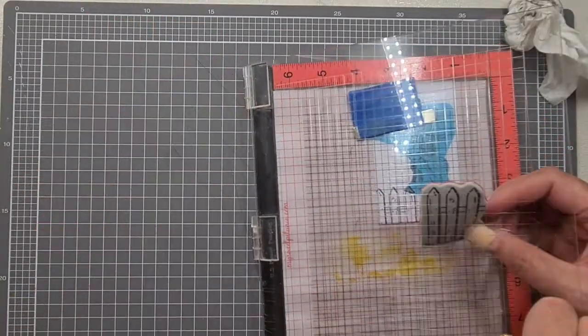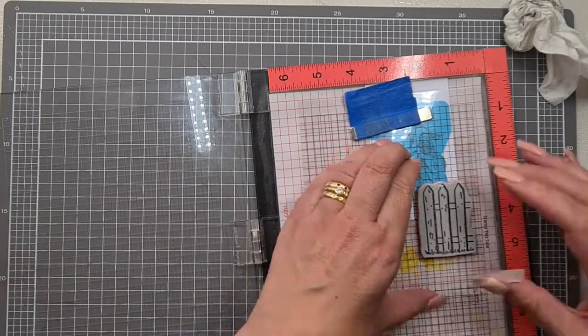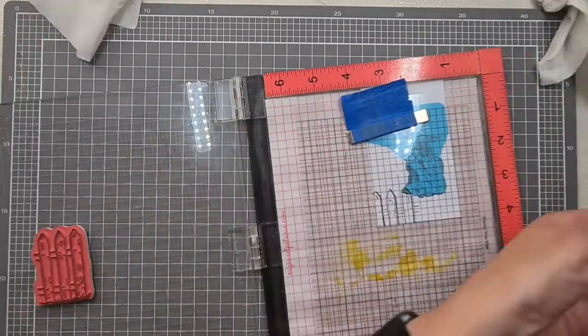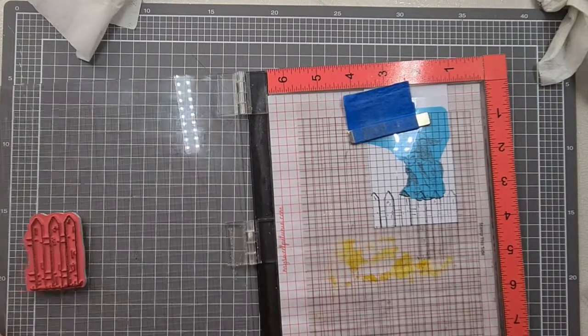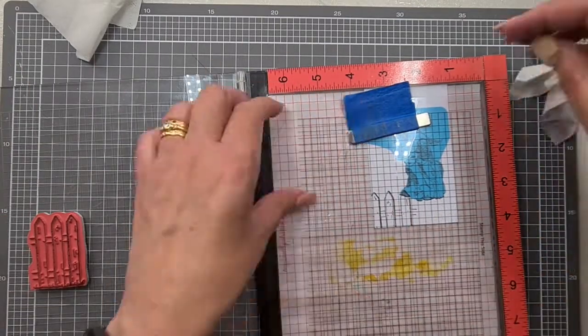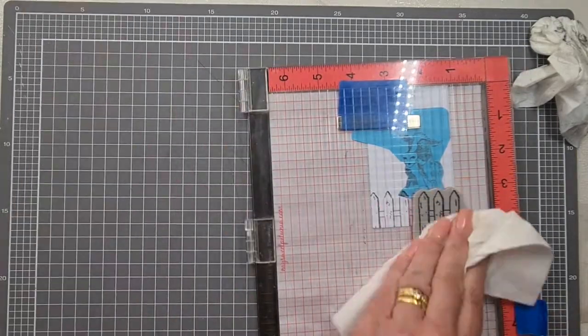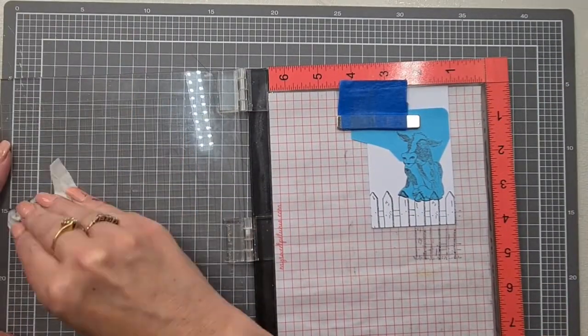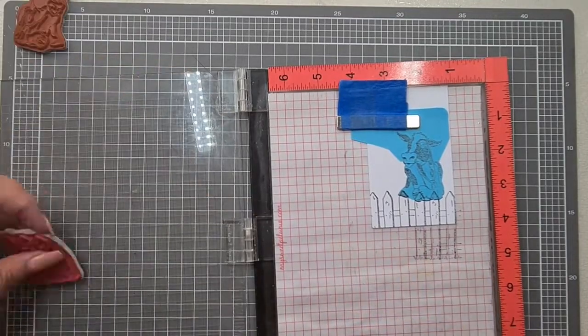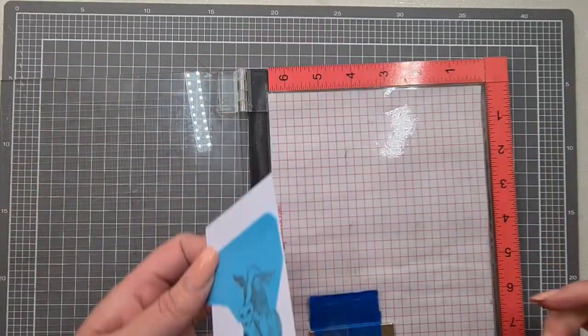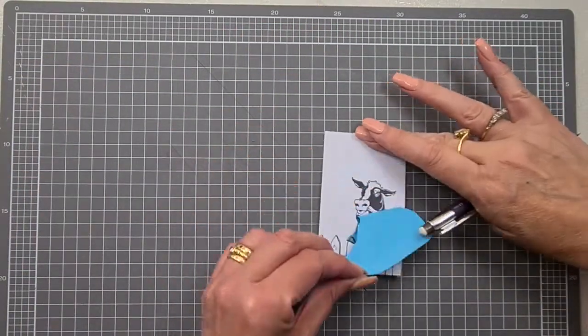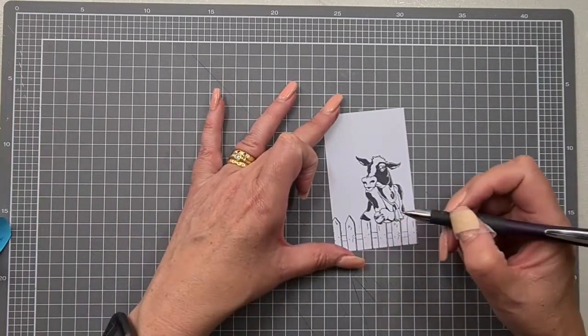We're going to use the Memento because we are going to use some Copic markers to color this all in. I wanted my cow to be sort of leaning over the fence. There is a little bit of creative license because some of her fat is sitting over the fence as well, but hopefully if I didn't tell you you're not going to pick it out.